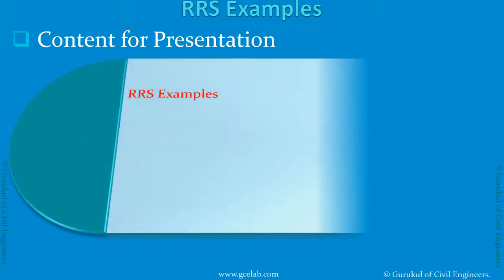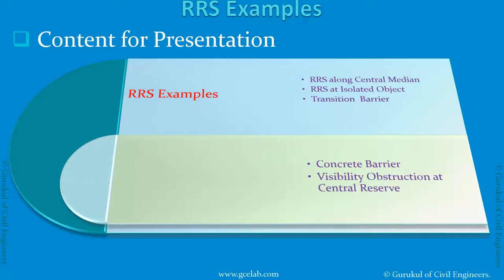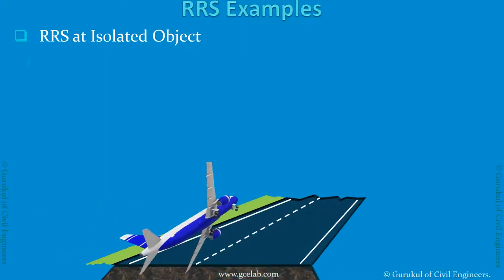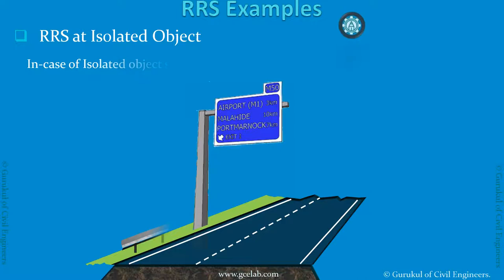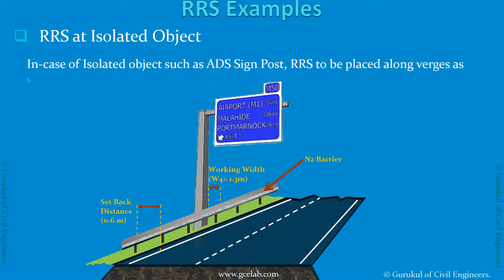In Road Restraint System examples, we will discuss Road Restraint Systems along the central median, at an isolated object, and transition barriers. In the case of an isolated object such as an advanced direction sign, the Road Restraint System is to be placed along the verges, as shown below.